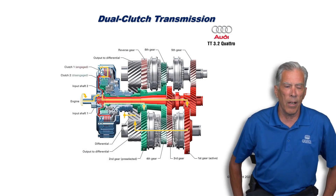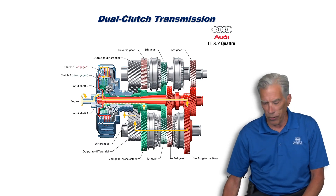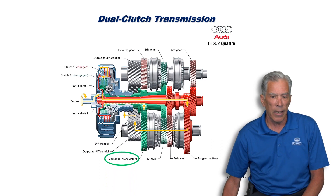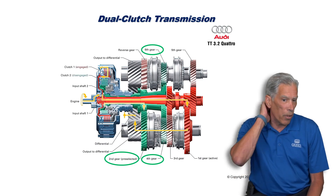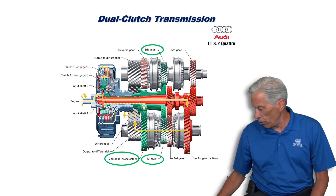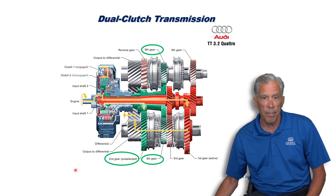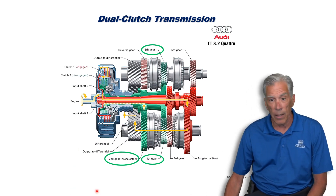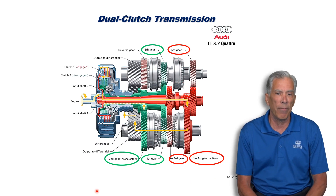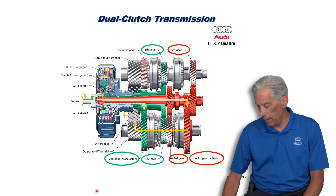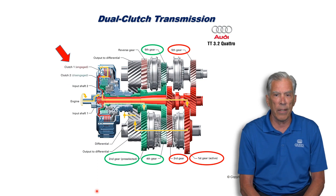Here's an example from Audi — a six-speed dual clutch. There are two clutches on the left-hand side, color-coded green and red. The green shaft, attached to clutch number two, operates second, fourth, and sixth gears. First, third, and fifth flow through the red shaft, which is attached to clutch number one.